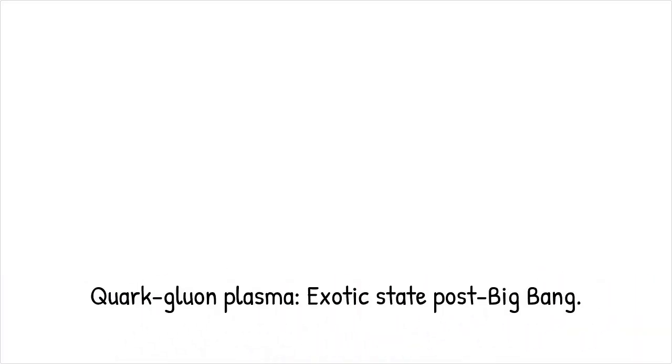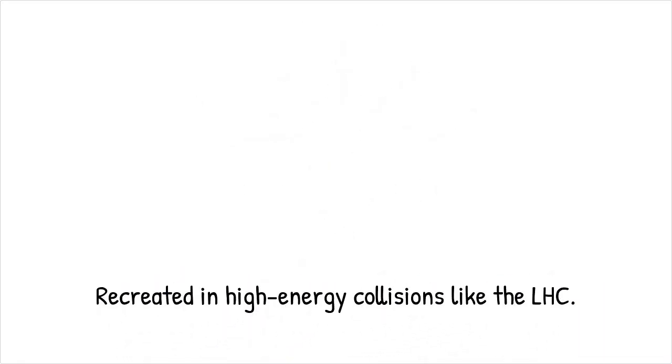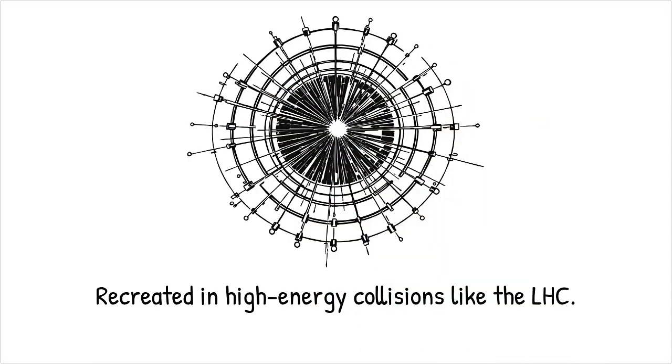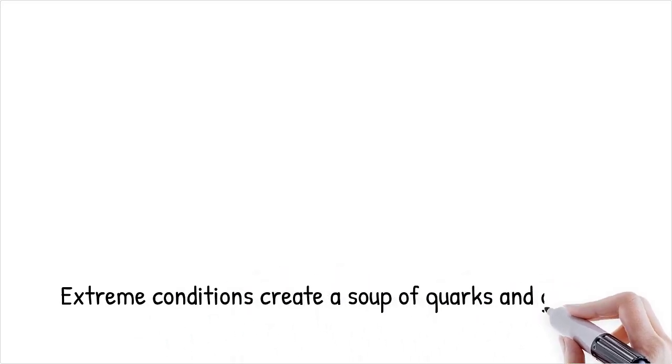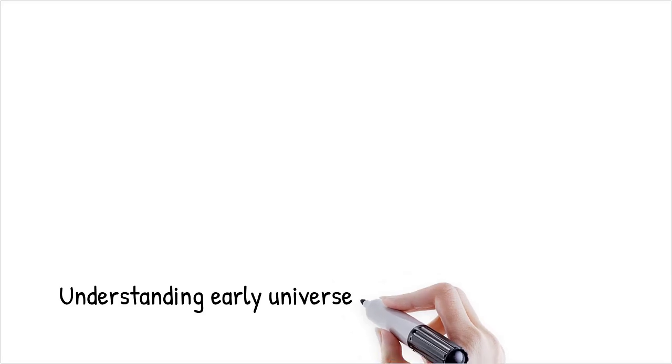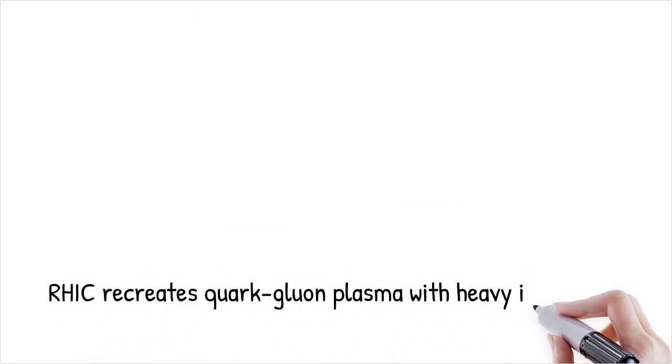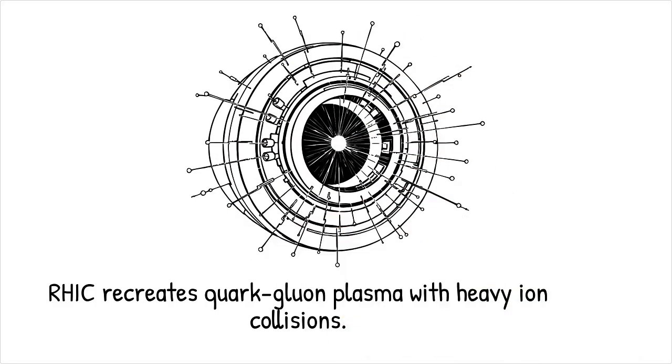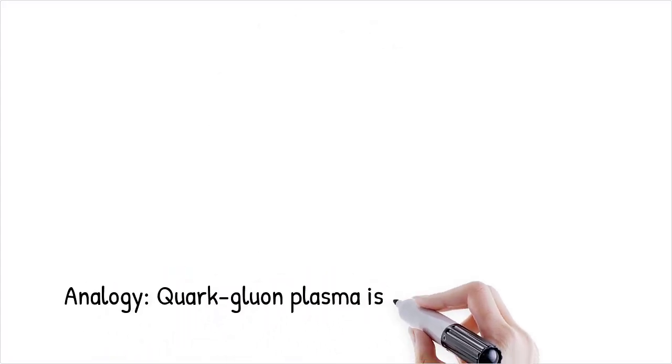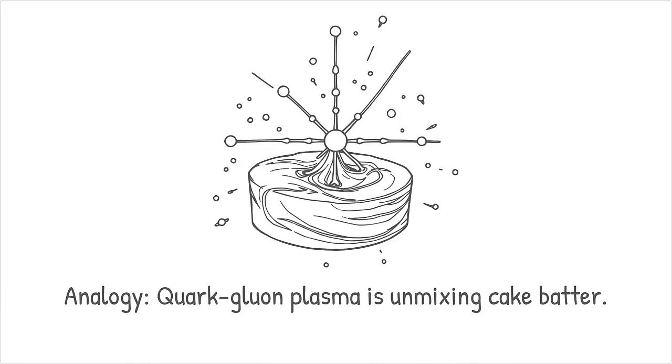Quark-gluon plasma is an exotic state of matter that existed microseconds after the Big Bang, where quarks, the building blocks of protons and neutrons, and gluons, which mediate the strong force, existed freely, unconfined by atomic nuclei. This phase can be recreated momentarily in high-energy particle collisions, such as those in the Large Hadron Collider. At extreme temperatures and densities, the forces binding quarks and gluons weaken, creating a soup of fundamental particles. Studying quark-gluon plasma helps scientists understand the early universe and the strong nuclear force. The RHIC, Relativistic Heavy-Ion Collider, has recreated quark-gluon plasma by colliding heavy ions at nearly the speed of light. Quark-gluon plasma is like unmixing a cake batter back into its individual ingredients, showing the universe's components before they formed particles.